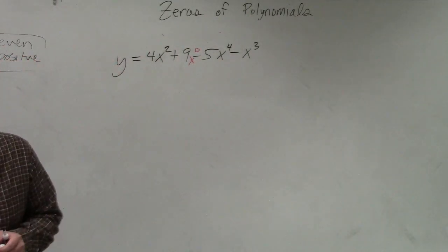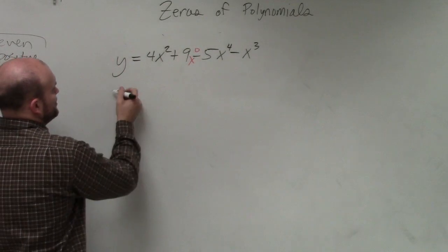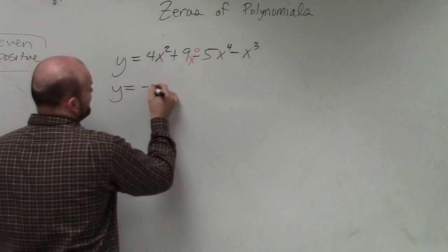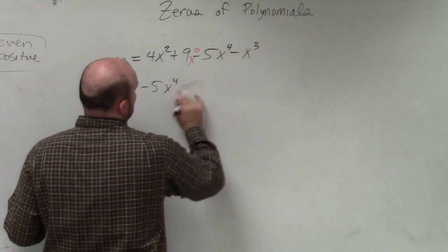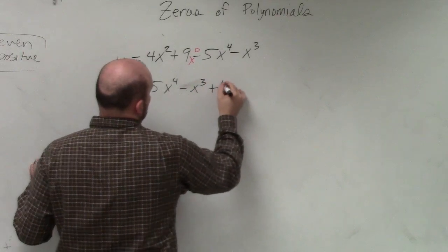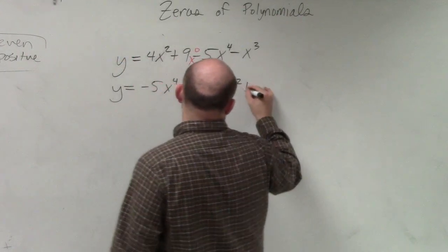So you could put an x to the 0, if you like, for that, just to kind of visualize it. So if I was going to put these in descending order, I would have negative 5x to the fourth minus x cubed plus 4x squared plus 9.